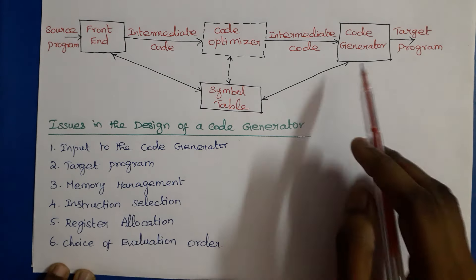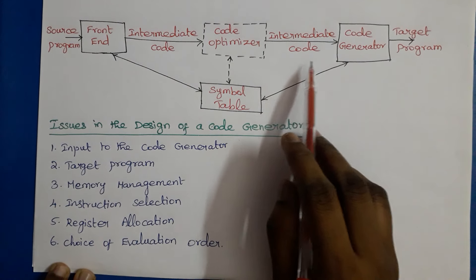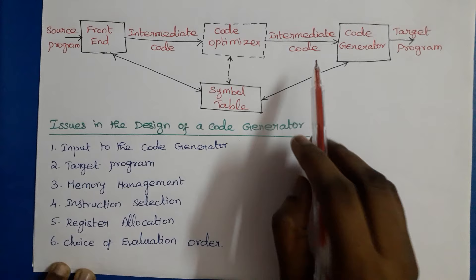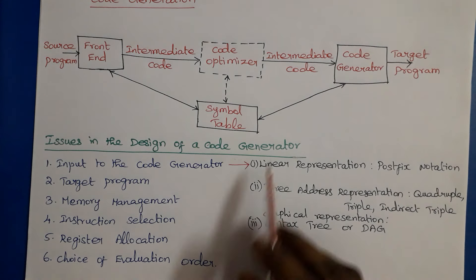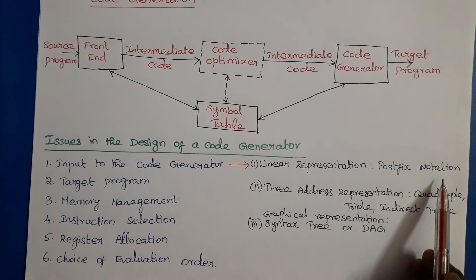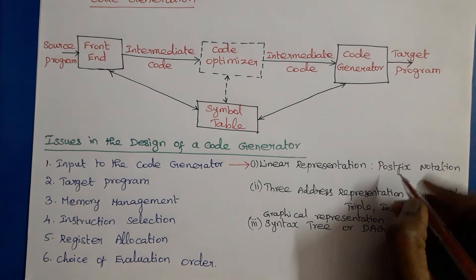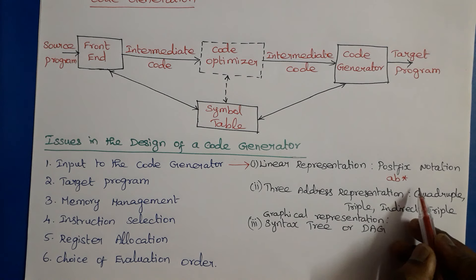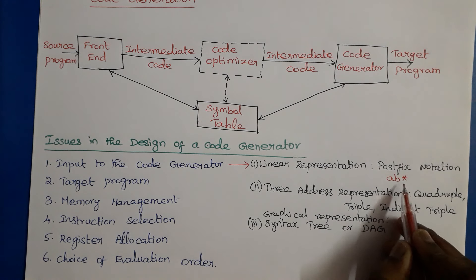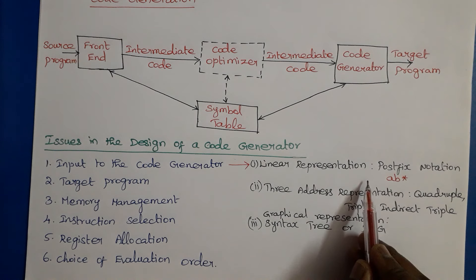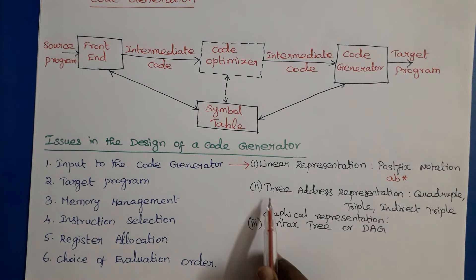The first issue is input to the code generator. The input for the code generator is intermediate code. The intermediate code may be a linear representation such as postfix notation. For example, in postfix notation the operator comes after the operands — so 'a b *' is the postfix notation for the infix expression 'a * b'.